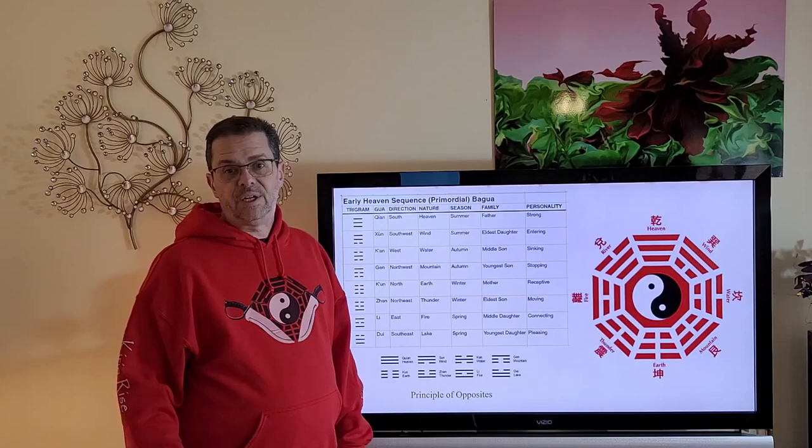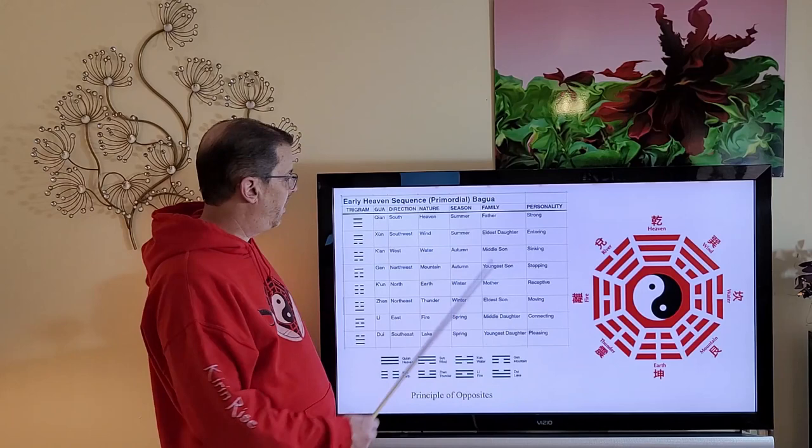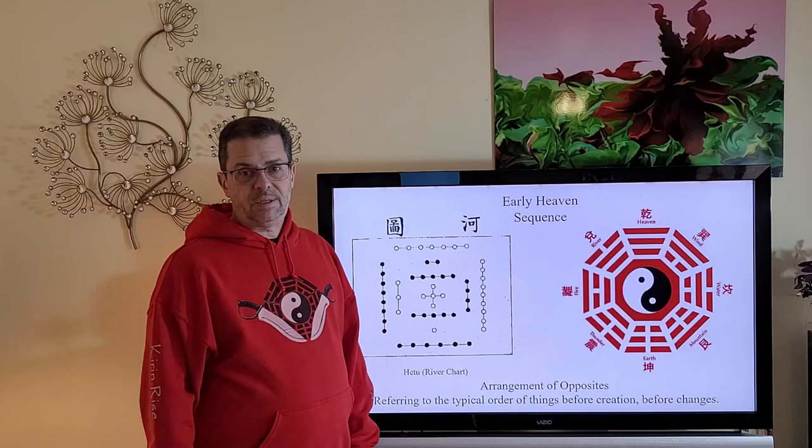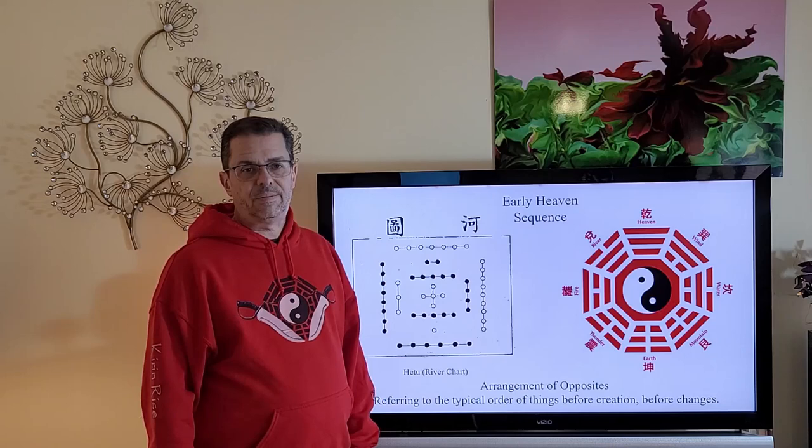So all the attributes of each symbol or Gua really are too many for a short talk, but you can see some of them listed here. So that's how the early heaven sequence Bagua was created from the He Tu diagram. It's an arrangement of opposites and is said to refer to an order of things before creation, before changes.